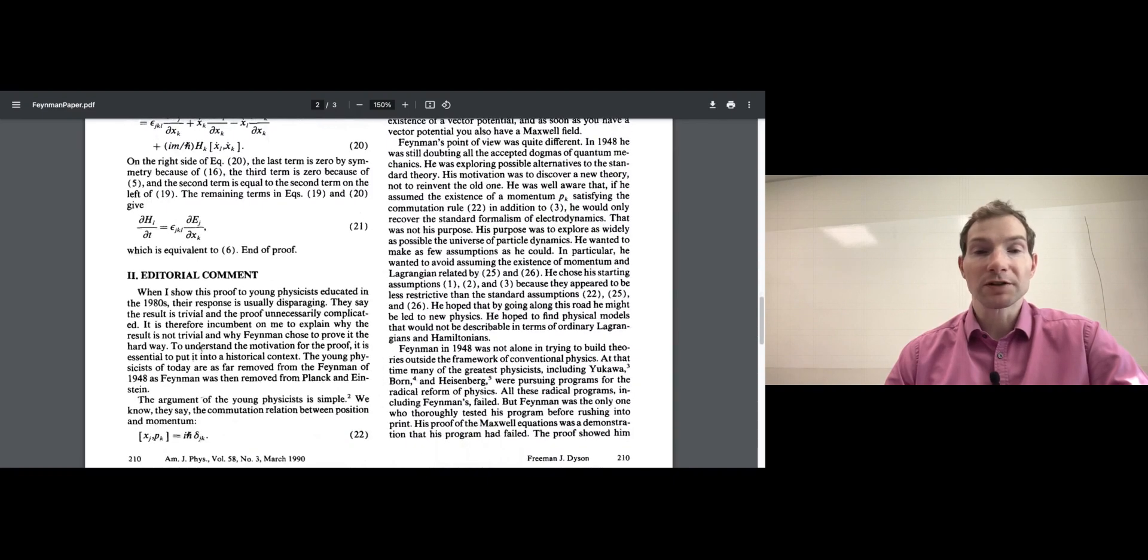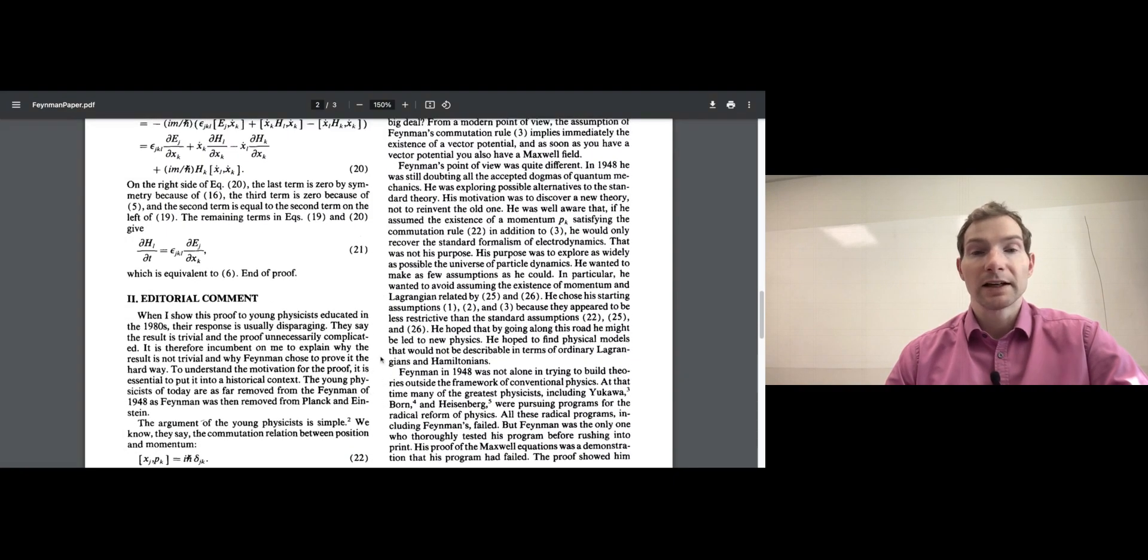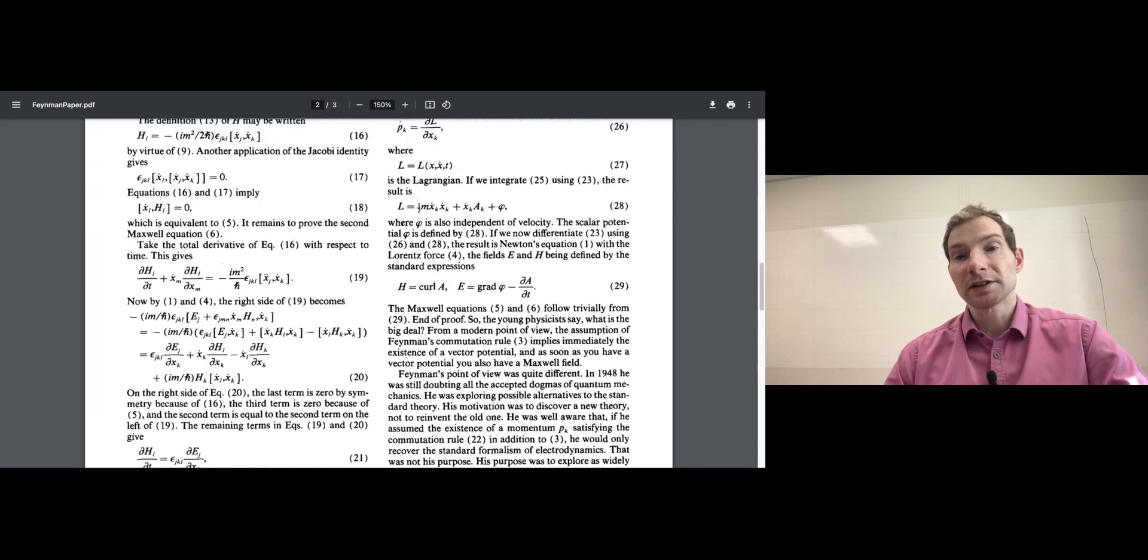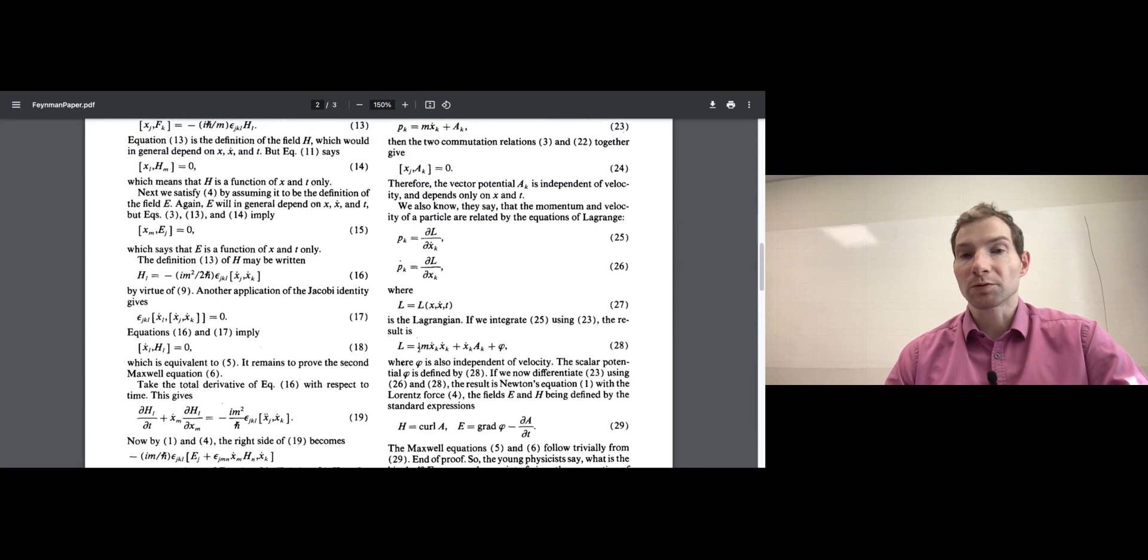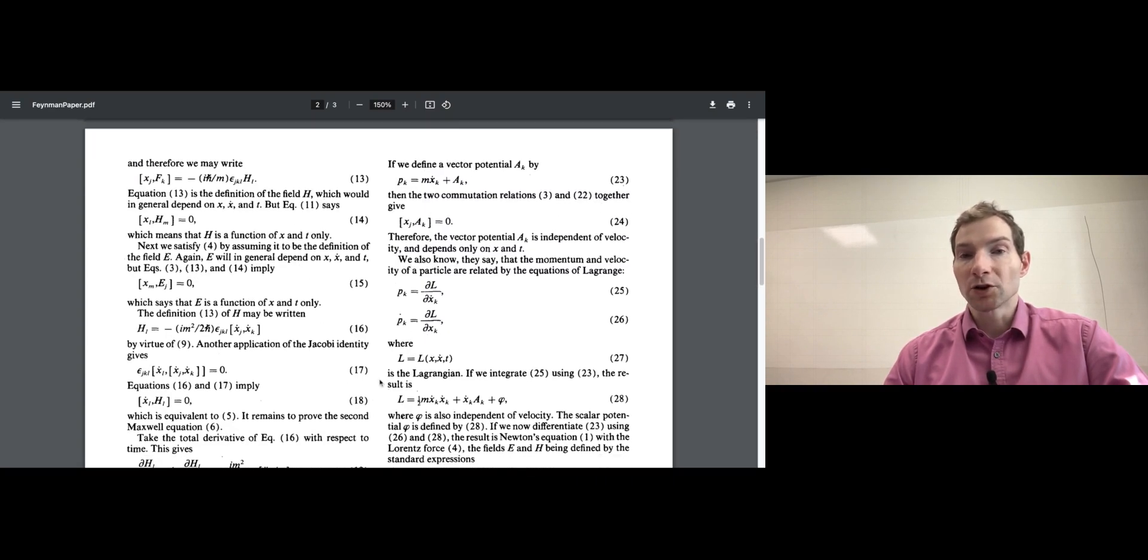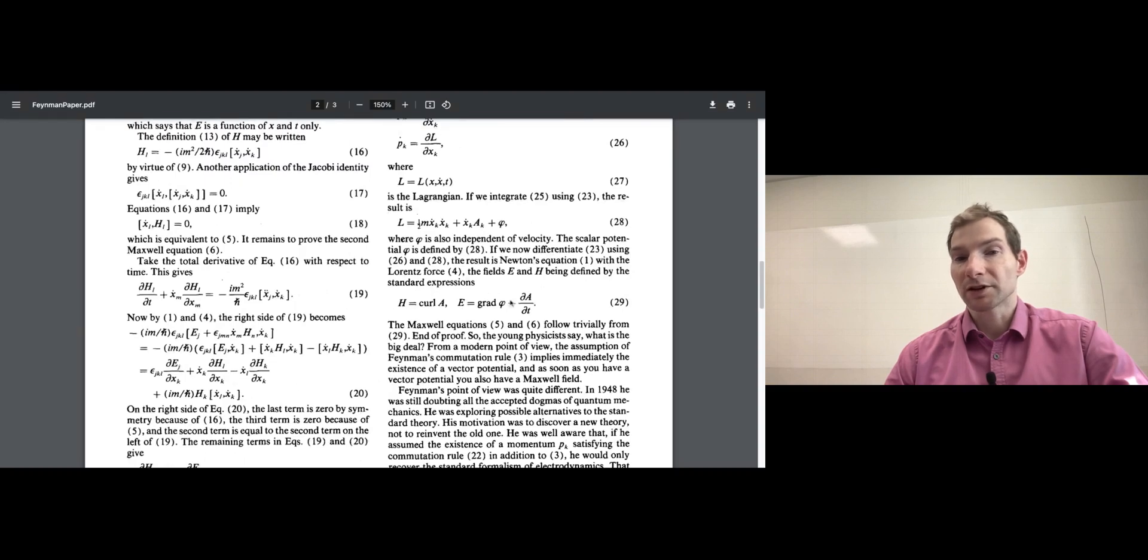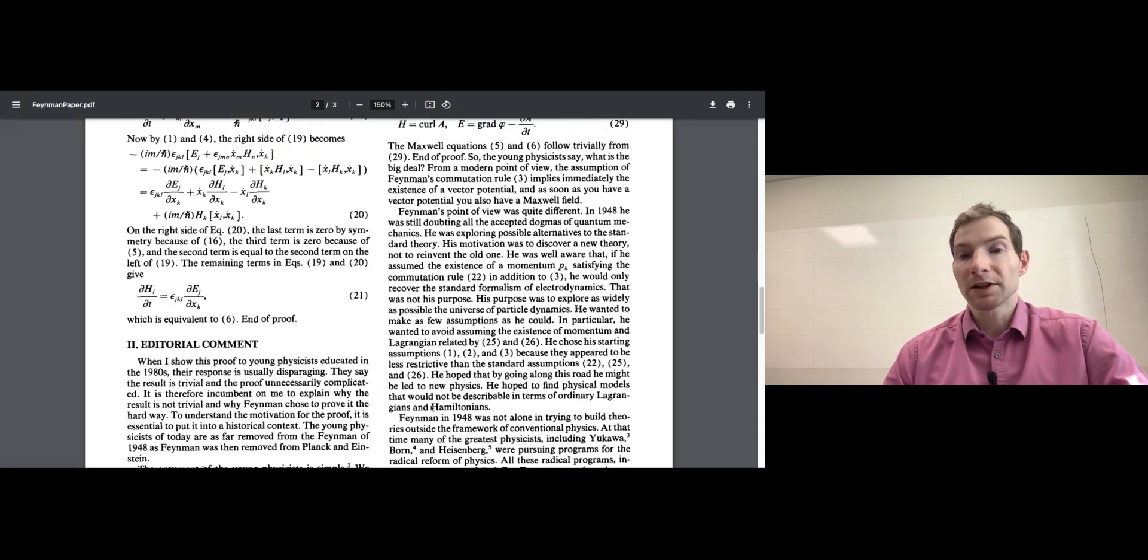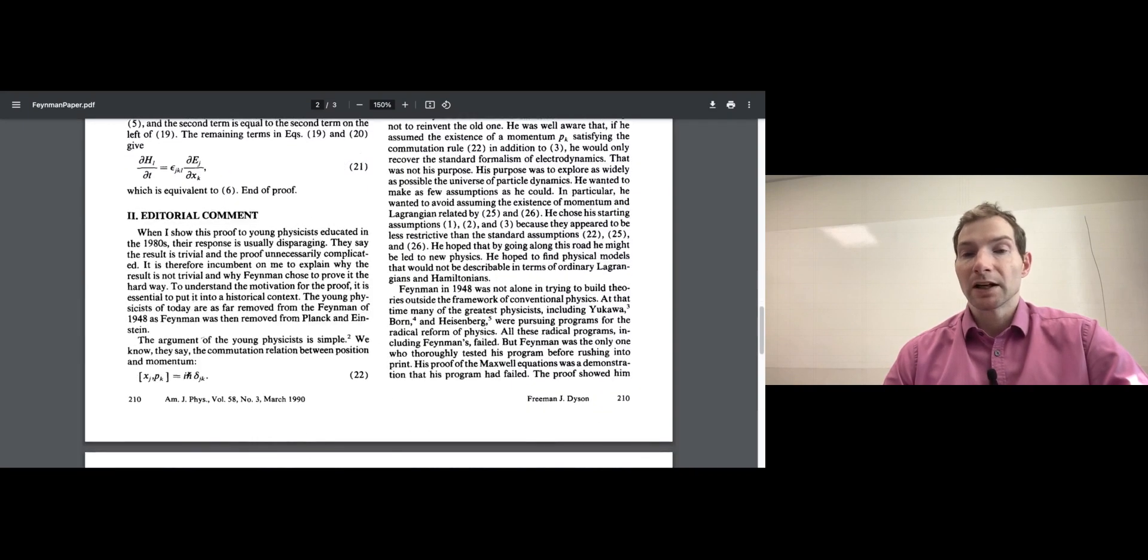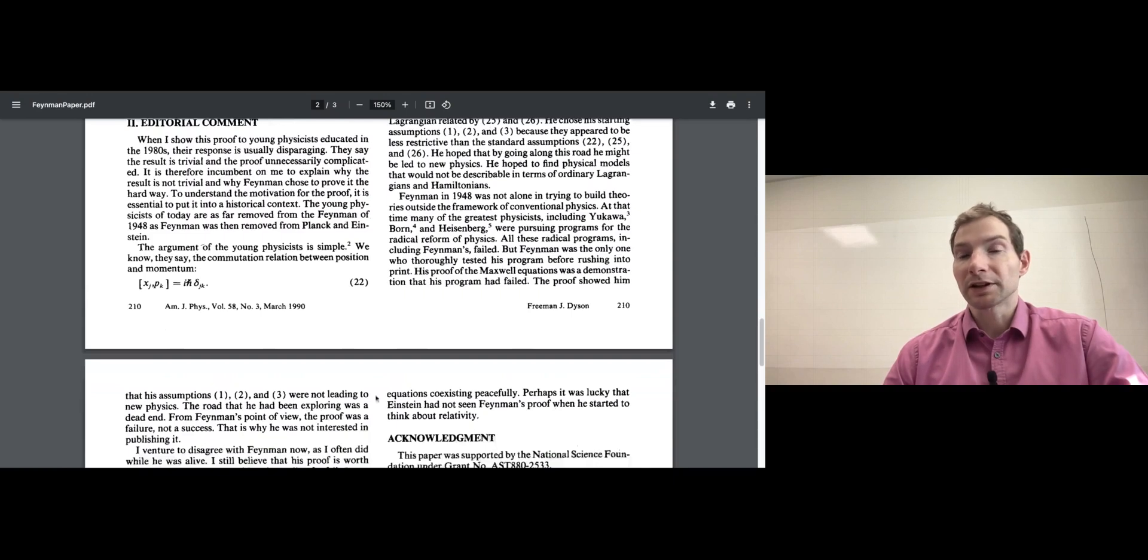And there is an interesting comment from Dyson here. And he claims that when he presented that to students, so that's a long time ago, right in the 80s, students were apparently unsurprised. And he actually goes on to explain why this is surprising. Feynman thought actually that his program had failed because he thought he would find actually some avenue. And he didn't find any because he retrieved electrodynamics, essentially.